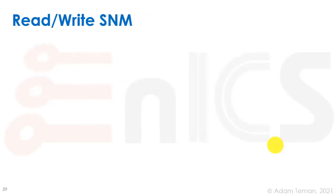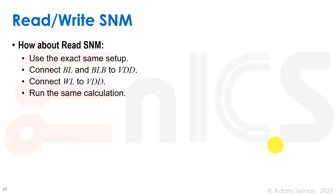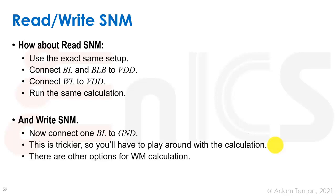For read and write SNM it's really simple — we use the exact same setup. For read SNM, connect bit line and bit-line-bar to VDD and the word line to VDD. For write SNM, same thing but connect one of the bit lines to ground. There will be a difference between write SNM from one side and the other, but since this is a symmetric cell you can really do it just on one side.